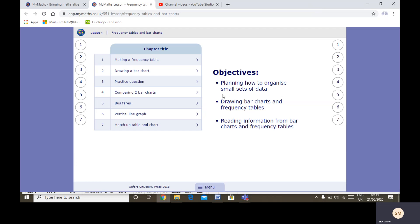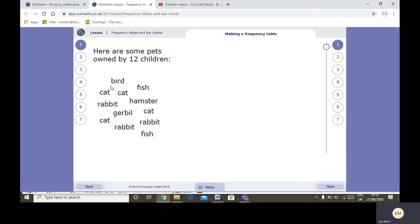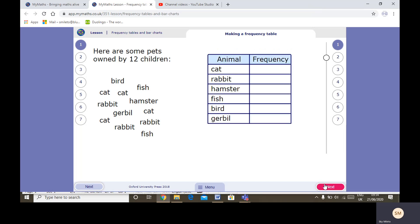So making a frequency table. Here are some pets owned by 12 children. It's hard to count them when they're jumbled up like this, so we're going to put them in a table.